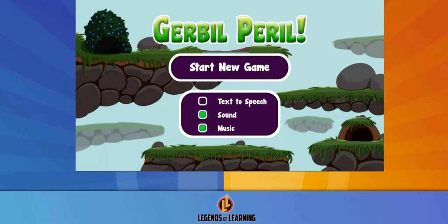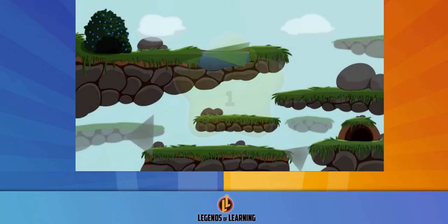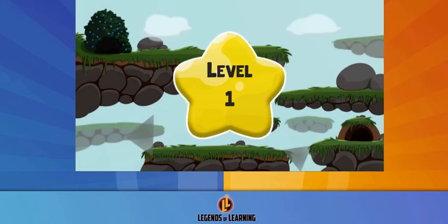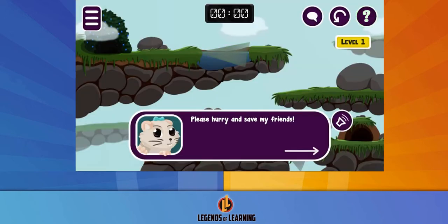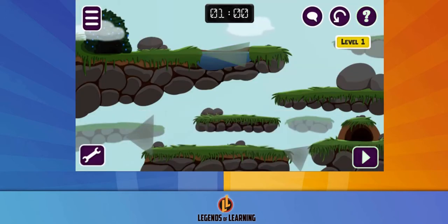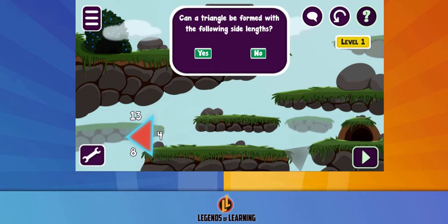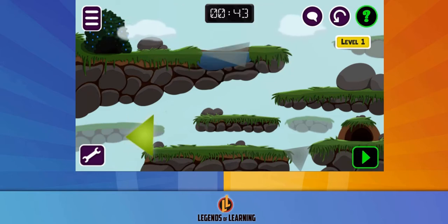Legends of Learning presents Goebel Peril, a math game that makes learning triangle shapes simple and fun to understand. Use your mouse button to click the triangle shapes and answer questions about the properties of triangles.